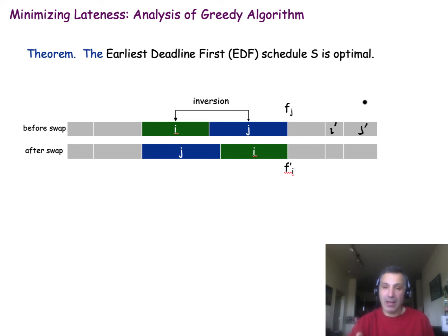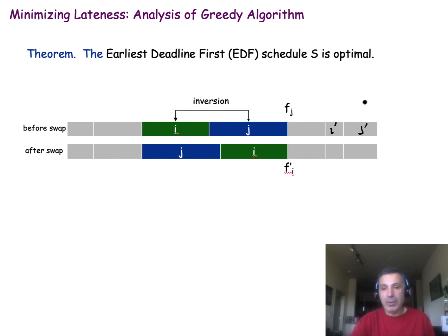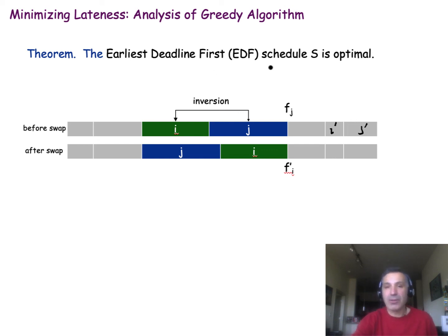At the end you have a schedule with no idle time and no inversions — which is exactly the schedule produced by the greedy algorithm. We have just shown that this schedule is also optimal. That concludes our proof that the earliest deadline first greedy algorithm is optimal.